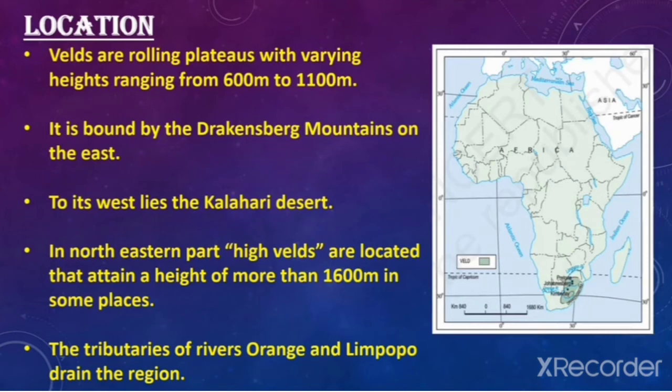Location of velds: velds are rolling plateaus with varying heights ranging from 600 meters to 1,100 meters. They are bounded by the Drakensberg Mountains on the east, and to the west lies the Kalahari Desert. The northeastern part has high velds that attain a height of more than 1,600 meters in some places. The tributaries of the Orange and Limpopo Rivers drain the region.